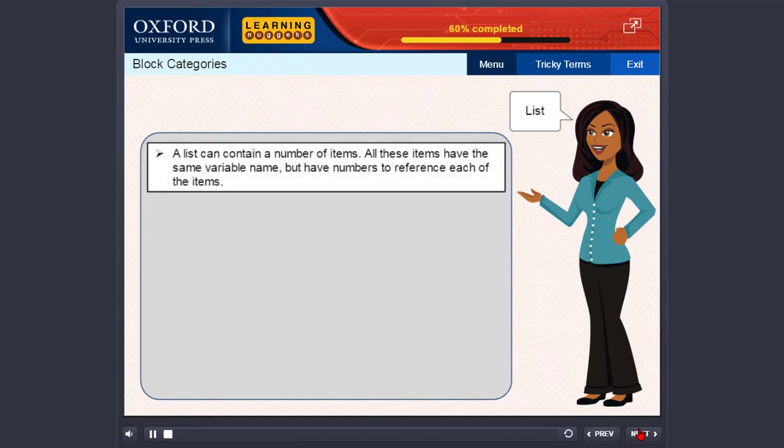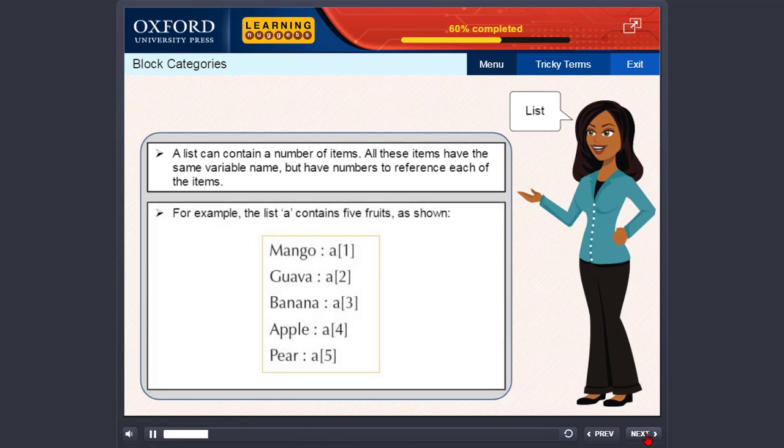A list can contain a number of items. All these items have the same variable name, but have numbers to reference each of the items. For example, the list A contains five fruits as shown.